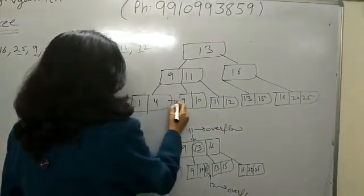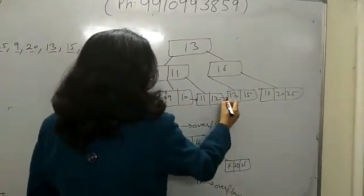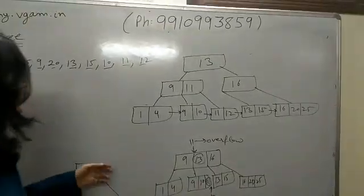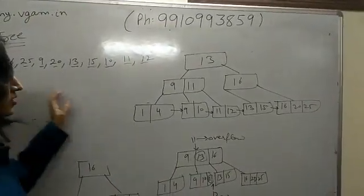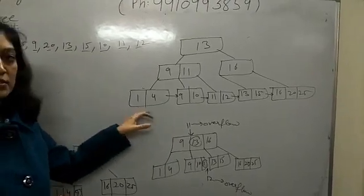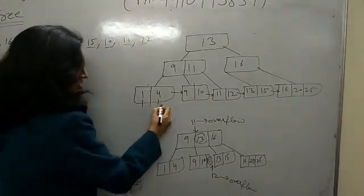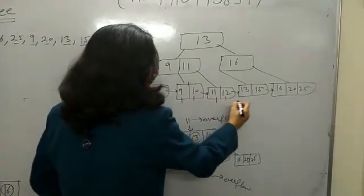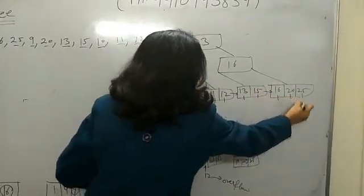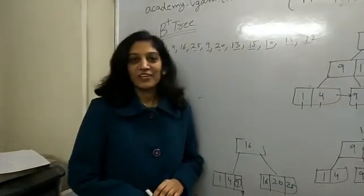We also have the P-next tree pointer at the leaf level, which points to the next leaf node. You will see that all the keys given to us are present in the leaf nodes. Data pointers are attached to each leaf node entry, which give us access to the desired record. That's it, thank you.